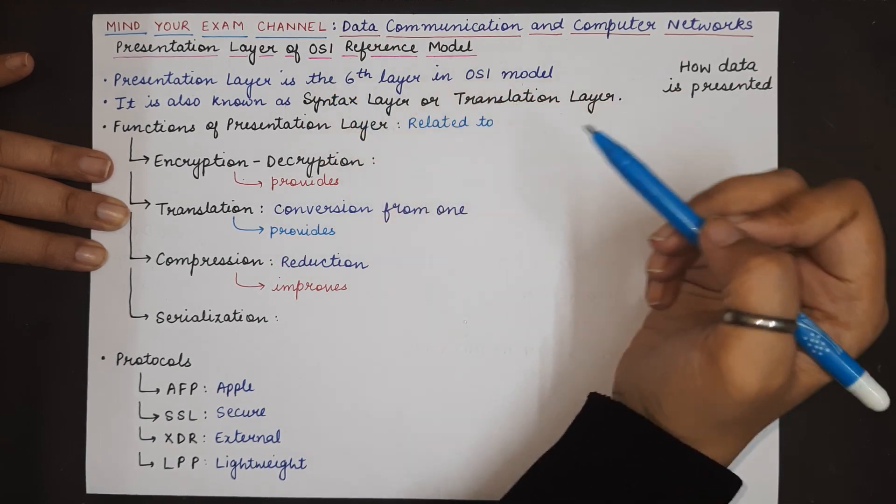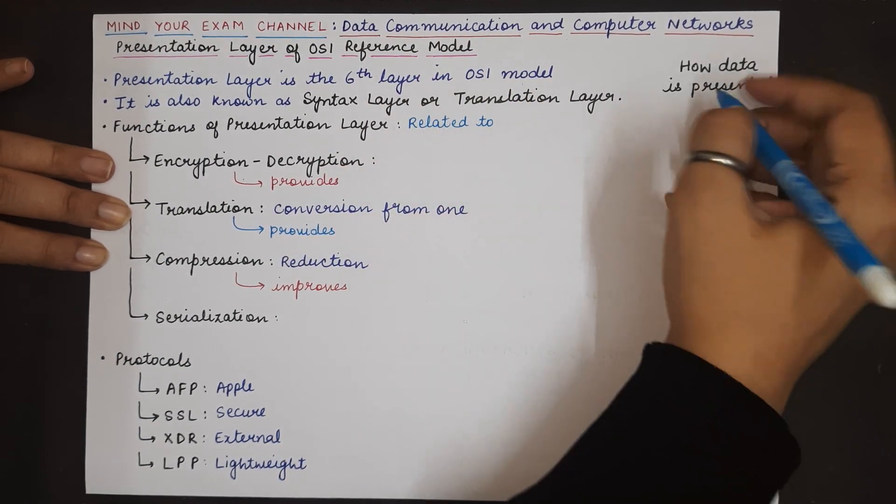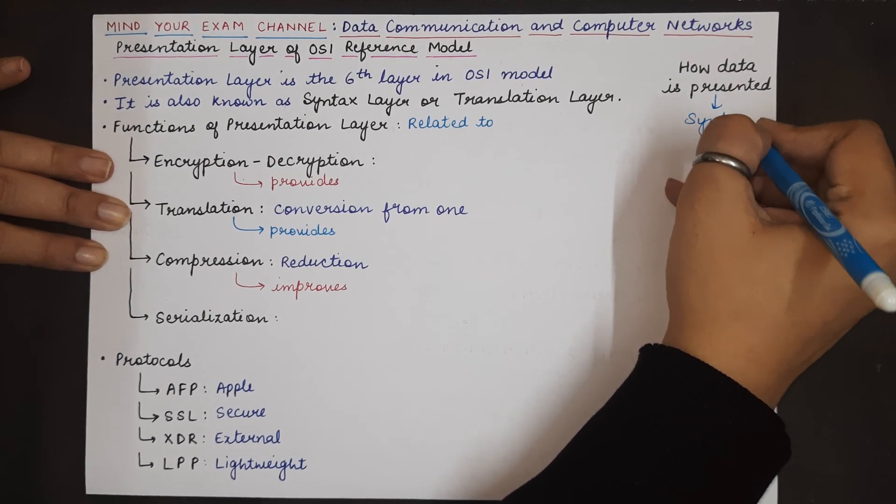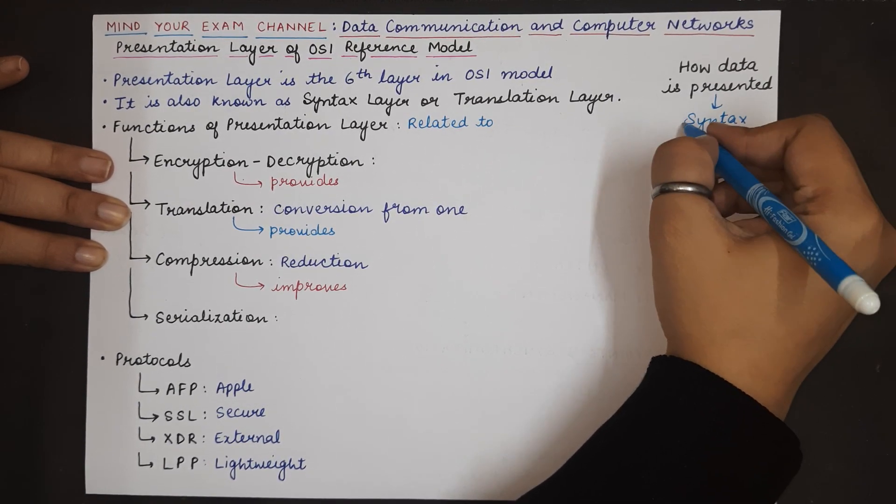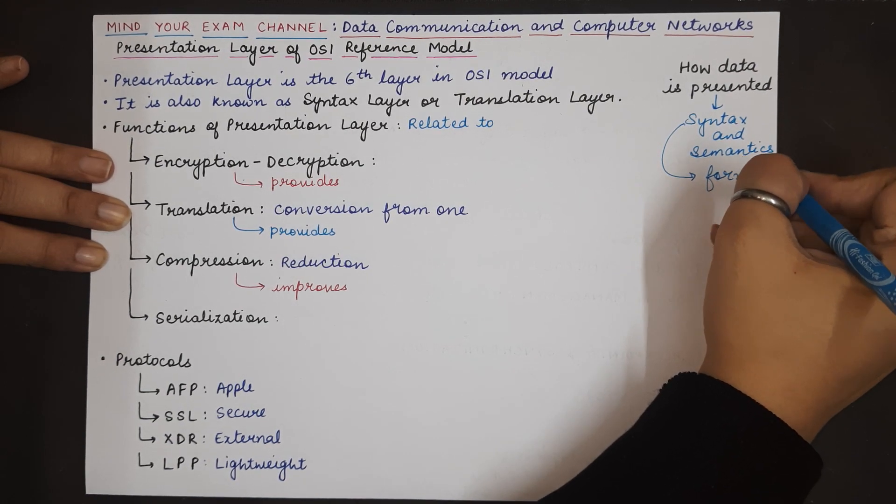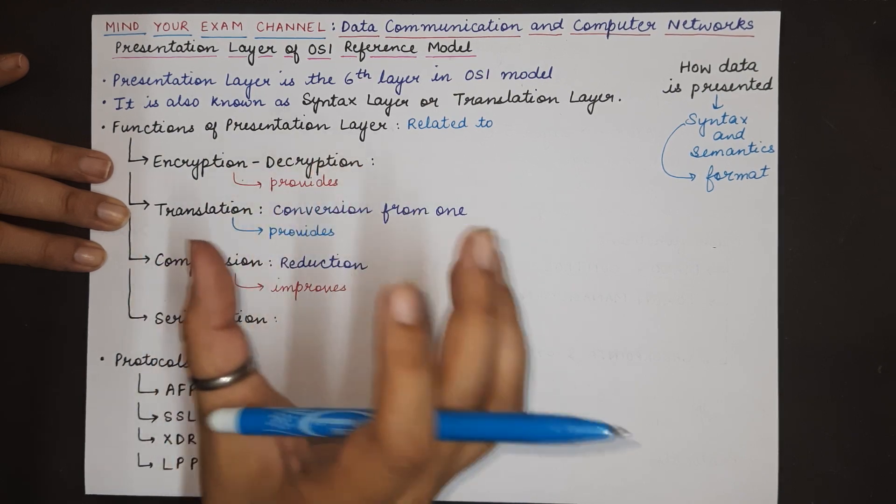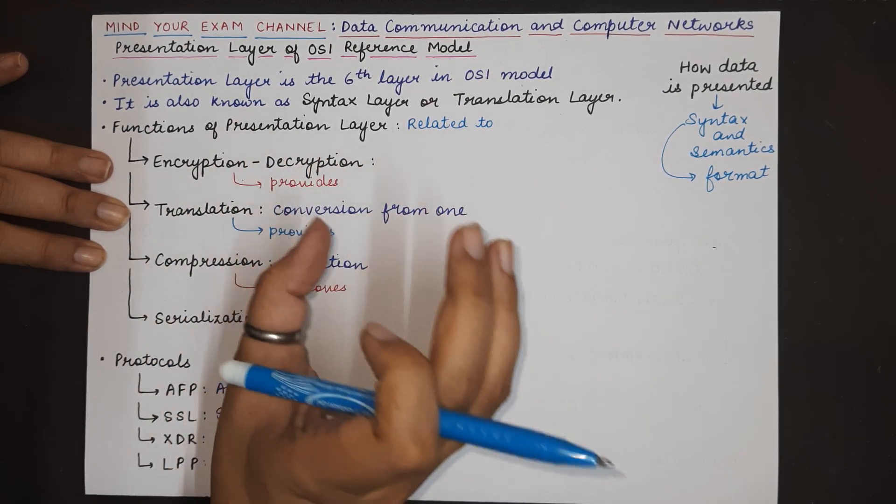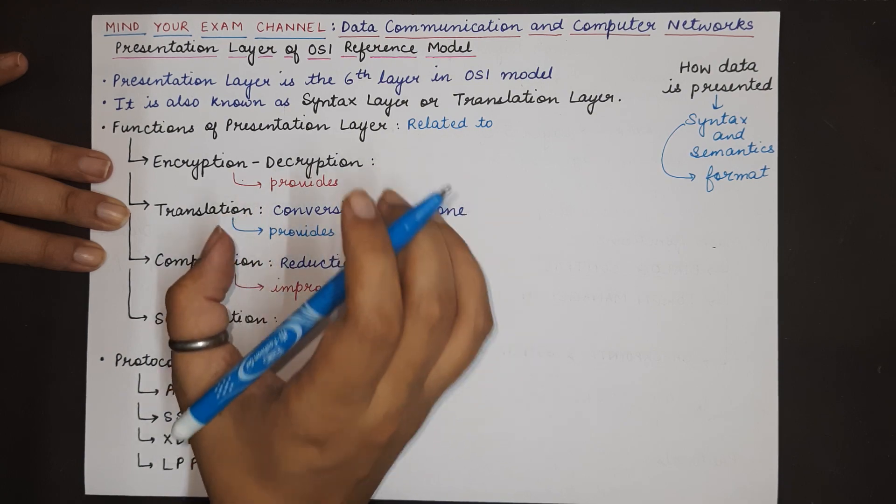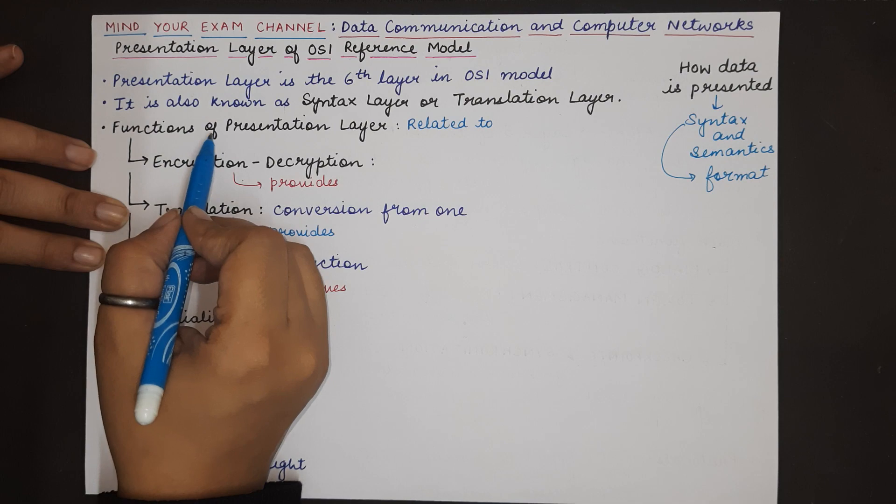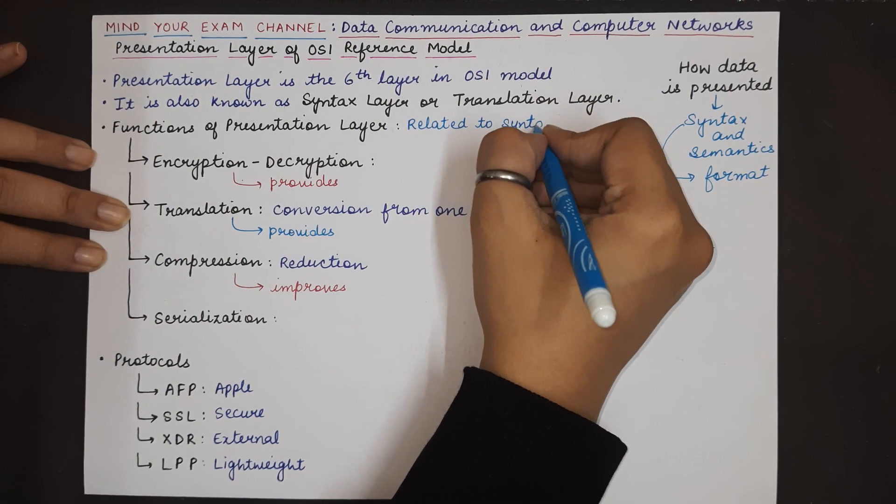How the data will be exchanged in what format or how conversion will take place from one format to the other. Basically this layer is concerned with the syntax and the semantics of the data that is being transmitted. Syntax basically means the format in which the data is being sent and received. Presentation layer checks how the data is getting presented to the receiving end and what conversions are required for security purposes. To fulfill all these responsibilities, there are certain functions of the presentation layer which are related to the syntax or the presentation of data.